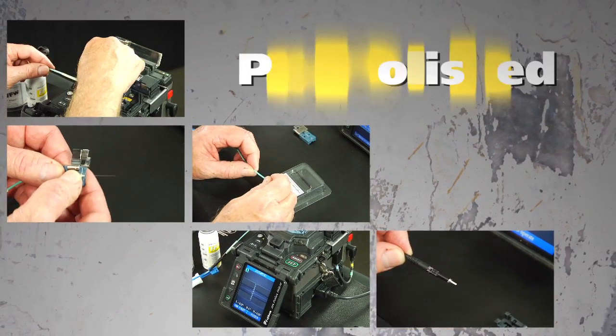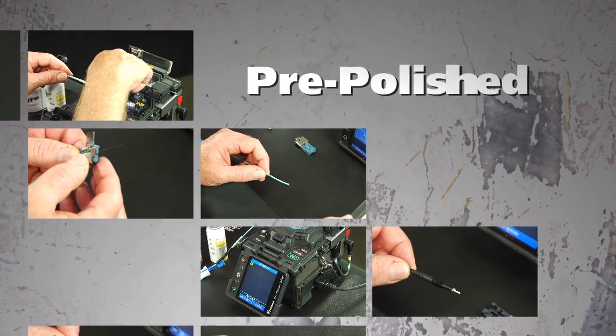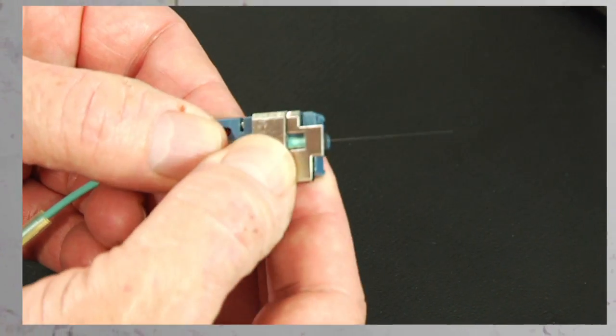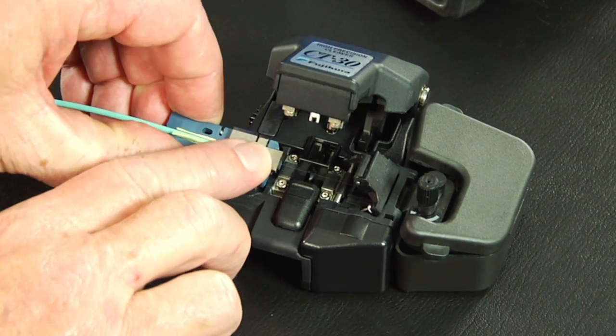With a factory pre-polished ferrule, its innovative field termination process eliminates polishing, adhesives, index matching gel, and crimping in the field.